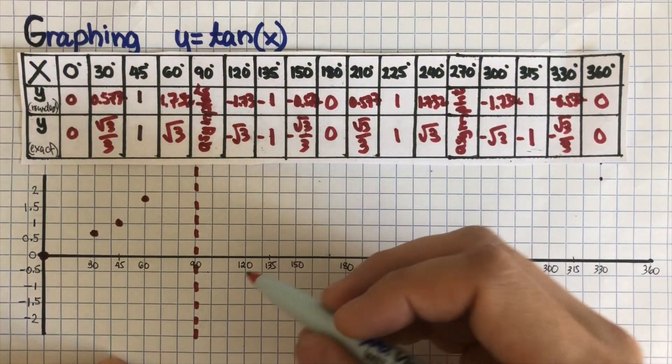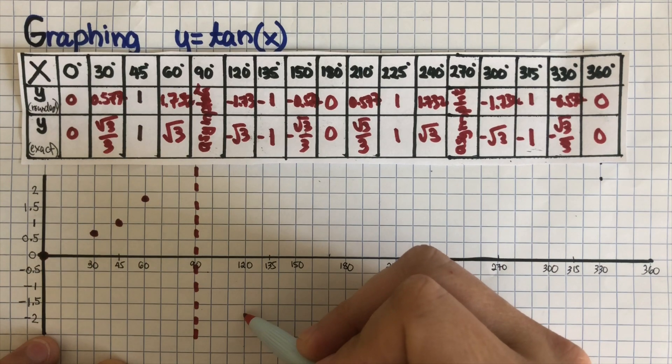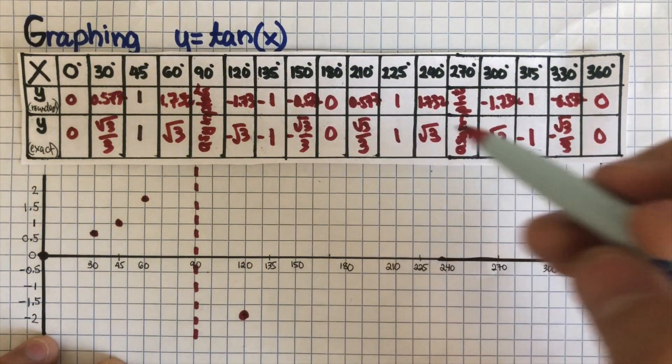So we move on to the next one. 120 is negative 1.73, so it's going to be somewhere around here. And then 135 is a negative one, so it's right here.